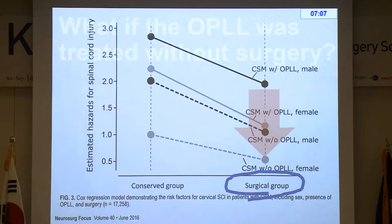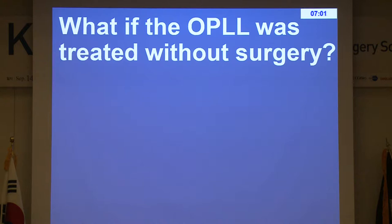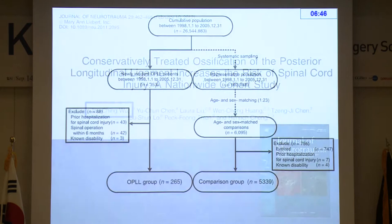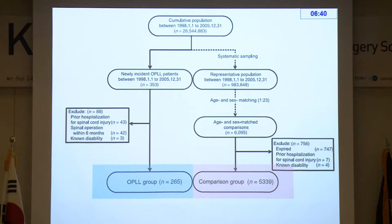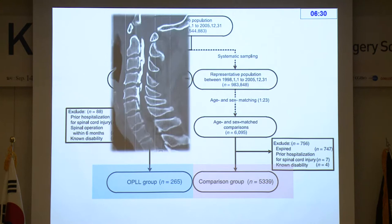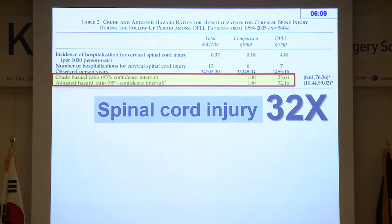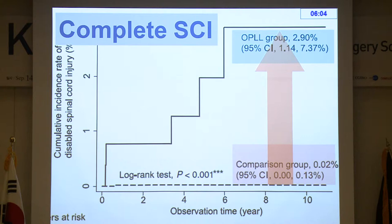Surgery should be advocated in patients with OPLL and CSM. What if OPLL patients are treated without surgery? We used the National Insurance Database again, comparing OPLL patients to an age-matched cohort with no OPLL. In the following years, dramatic differences emerged: the control group had quite low spinal cord injury incidence, while the OPLL group had high incidence rates. The adjusted hazard ratio is 32 — so 32 times the risk for patients with OPLL managed conservatively.